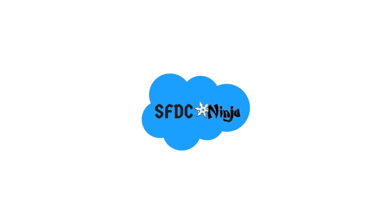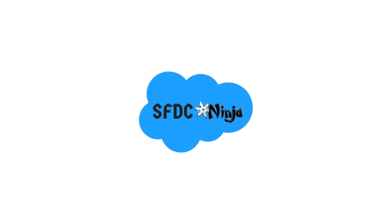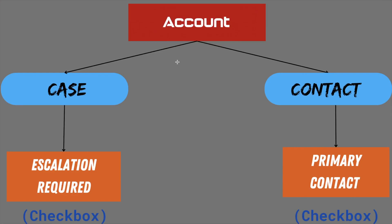Before we dive into VS Code and start coding, let's go over some important points for today's scenario so that you will be able to understand it more clearly. First, let's start with the data model. In today's scenario, we are going to work with three objects: Account, which is the parent object; Case, which is the child object; and Contact, which is also a child object. On the Case object, we have a checkbox field called 'Escalation Required' which indicates whether escalation is required on a case. Also on the Contact object, there is another checkbox field called 'Primary Contact' which indicates whether a contact is primary or not.